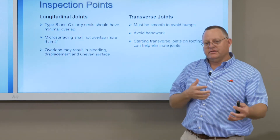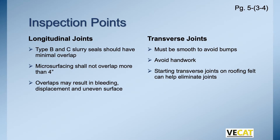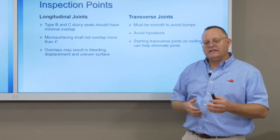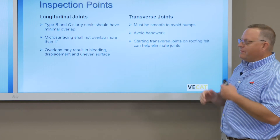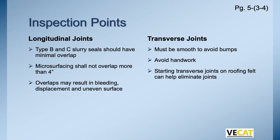For microsurfacing of any type, no more than a four-inch overlap. As they pull one lane and then come to the next, we want to ride right along that existing edge. Overlaps result in bleeding, displacement, and an uneven surface — that's why we're trying to minimize it, because you'll have a lot of liquid and material in a very small space. Transverse joints need to be smooth because that's what the traveling public judges roads on. We want to avoid handwork because the more you touch it, the more damage you can do.